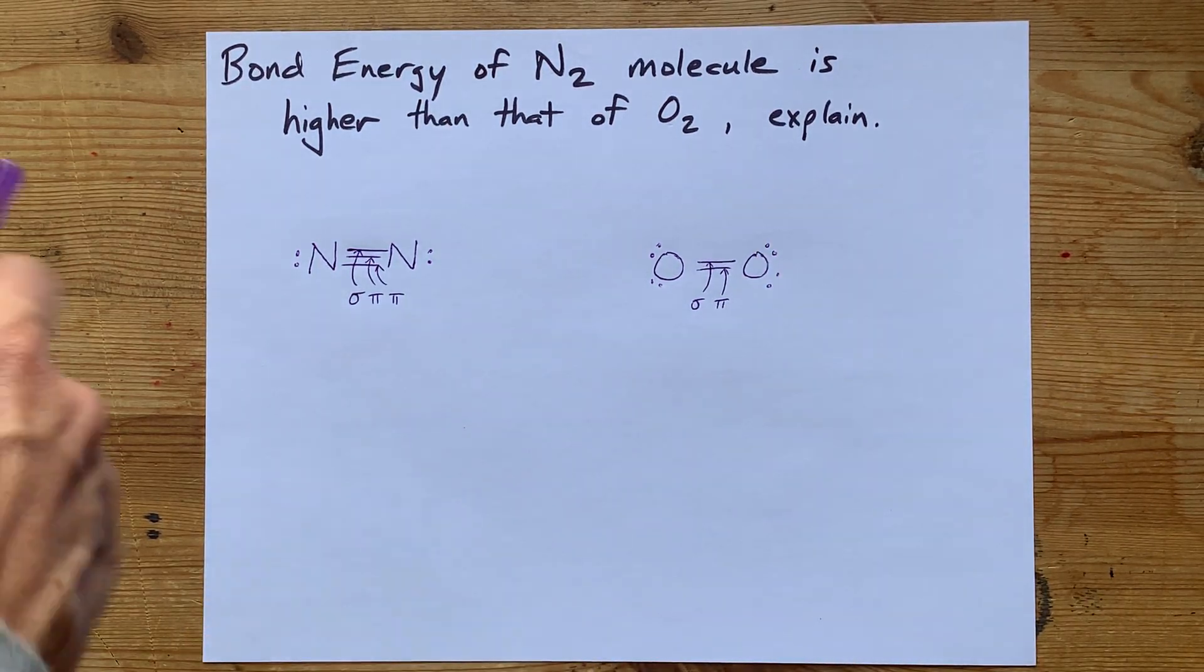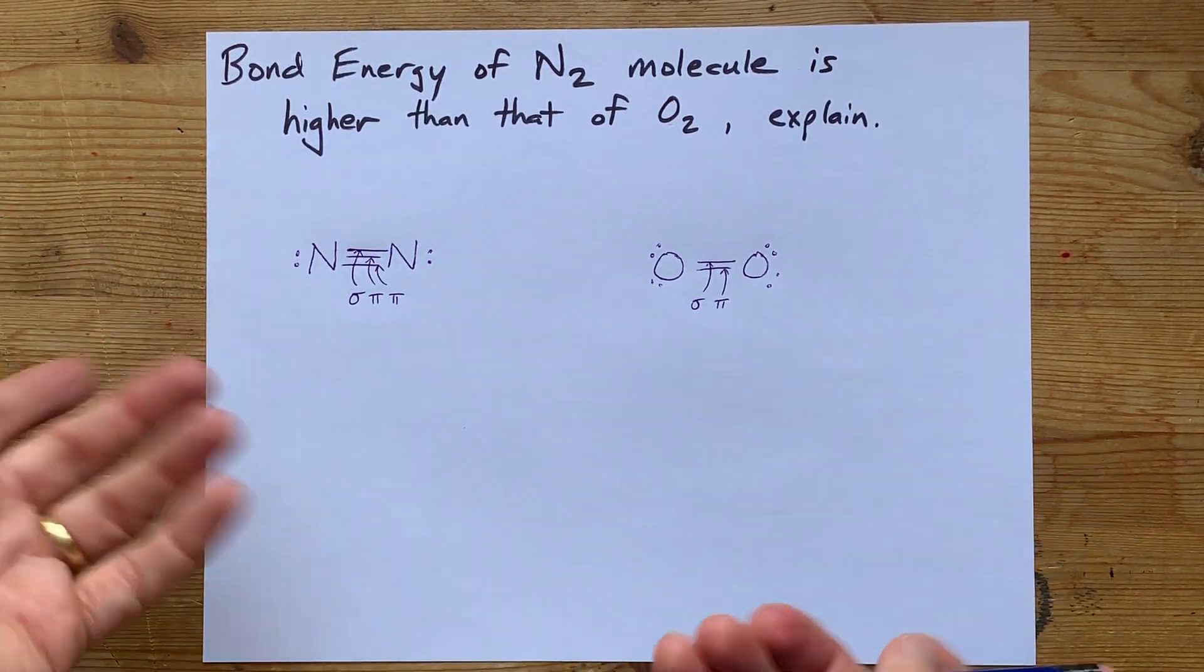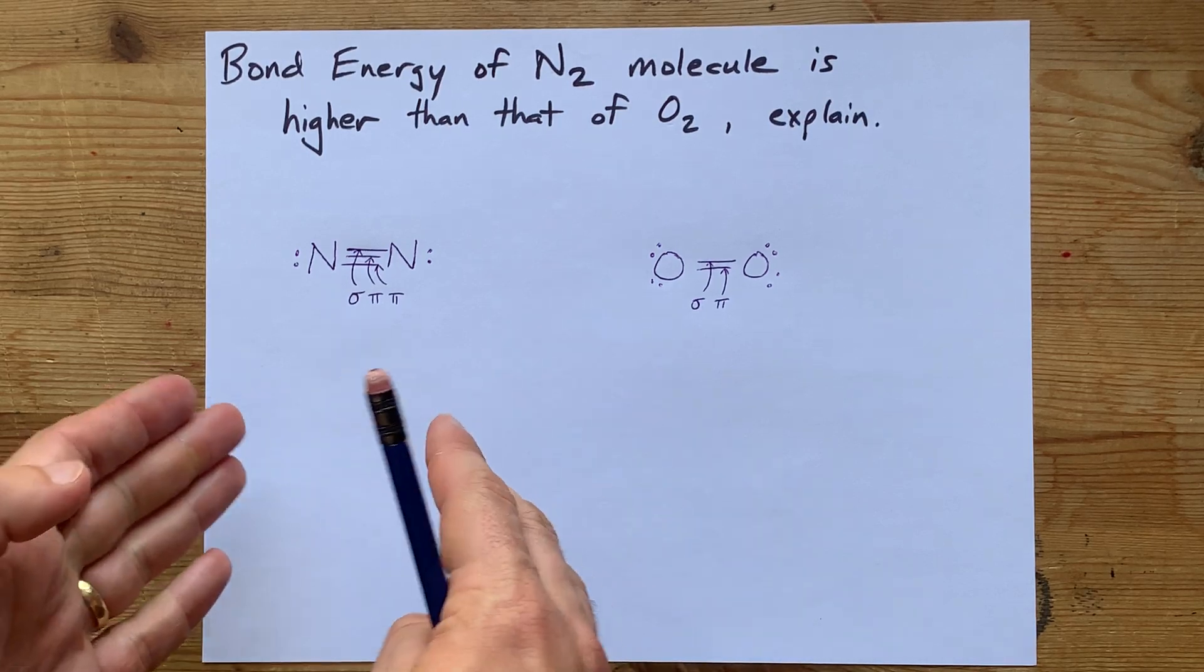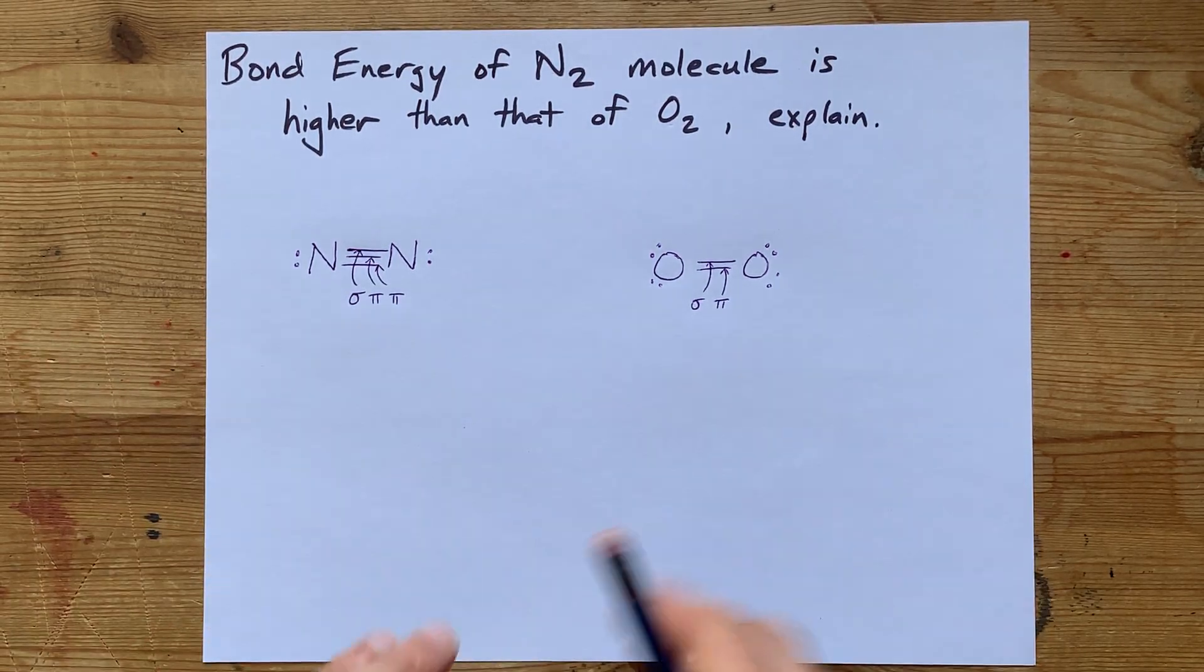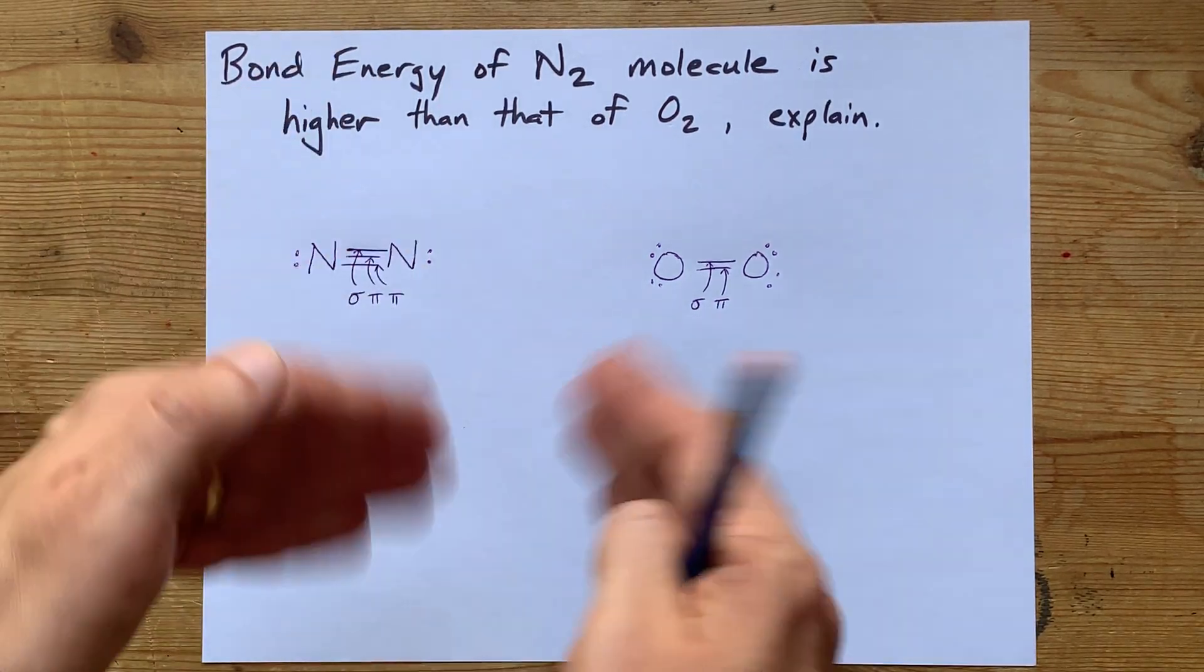Now, the strongest bond between any two atoms is the sigma bond, but the pi bonds also add some strength, or rather add in bond energy.